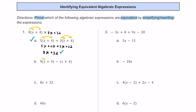For B, let's distribute this 9 to both terms. 9 times 1x is 9x, and 9 times 4 equals 36. Then we distribute this negative 1 to the x and to this 4. Negative 1 times x is negative x, and negative 1 times positive 4 is minus 4. Combining 9x take away 1x gives 8x, and 36 minus 4 is 32. So we get 8x plus 32, which matches, so this is also an equivalent expression.